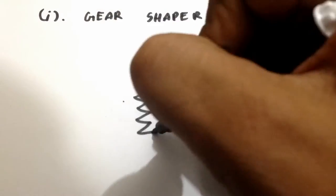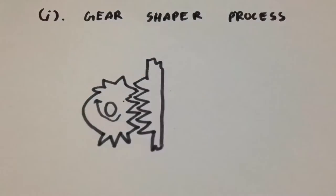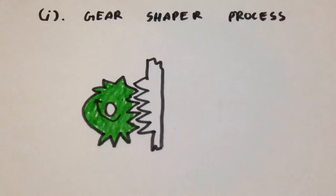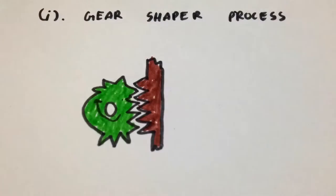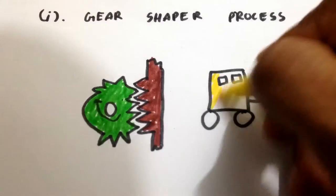First, gear shaper process. A pinion shaped cutter is used which carries the tooth profile to be cut. A gear blank is introduced by the help of a sliding head and is cut using the to and fro motion. It is suitable for medium and large size batches.